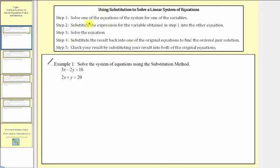For step 1, we solve one of the equations of the system for one of the variables. Looking at our system, notice how it would be easiest to solve the second equation for y because we can solve for y in one step. If we solve for any of the other variables in either equation, it would take two steps and we might end up with fractions, which would complicate things. So for step 1, let's solve this equation for y by subtracting 2x on both sides, which gives us y equals 20 minus 2x.